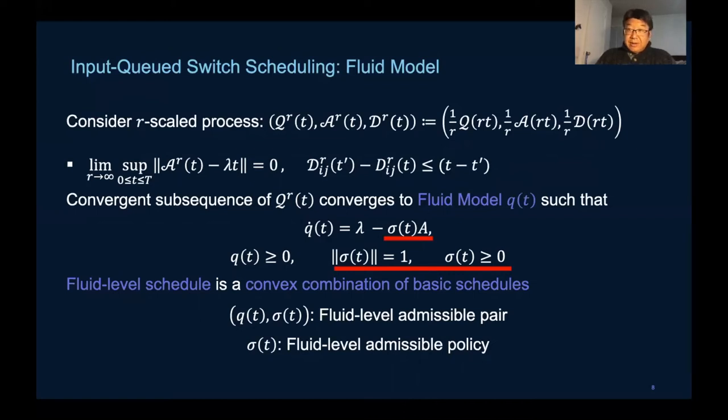This guarantees the existence of the convergence subsequences for bounded sequences. The convergence subsequence Q^R of t approaches a deterministic process Q of t.